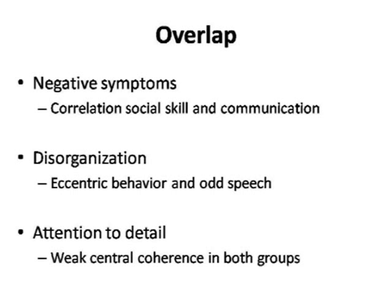Disorganization, based on eccentric behavior and odd speech, is not surprising as an overlap area, because in autism you expect to see more behavior that is not socially appropriate, which may overlap with disorganization symptoms. Attention to detail was also overlapping, possibly attributed to both groups having problems with central coherence. The three cognitive theories of autism — weak theory of mind, weak central coherence, and problems in executive functioning — also appear in individuals with schizophrenia. That's the overlap.